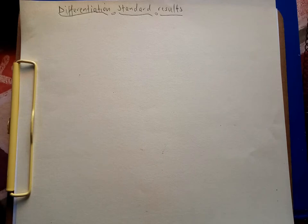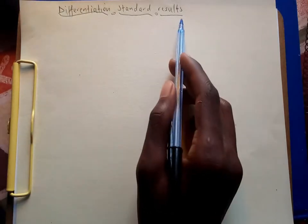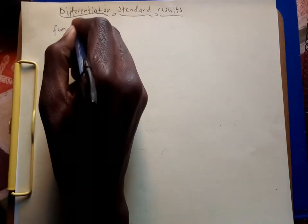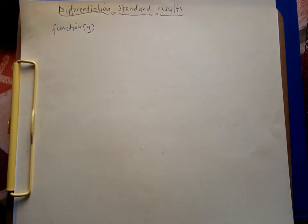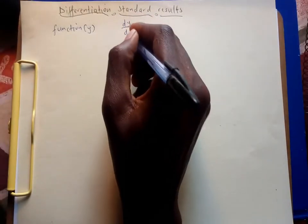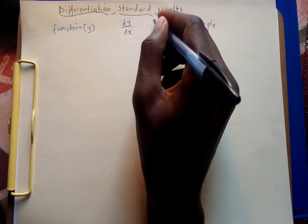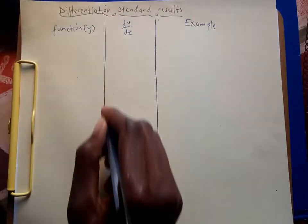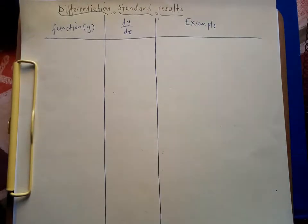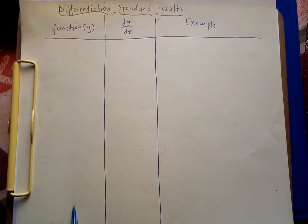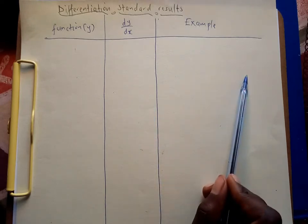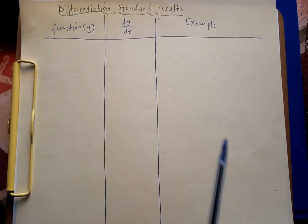Hello everyone and welcome to our YouTube channel, The Study Home. In our previous video we looked at differentiation from first principles. Today we are going to look at the standard results in differentiation. We are going to look at a function, how it appears after its derivative dy/dx, and then have an example. This is the general form — functions, their derivatives, and examples — so that if you are given a problem to differentiate, you can easily relate and find the answer.